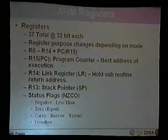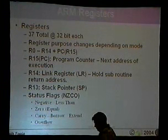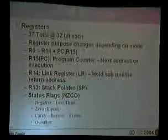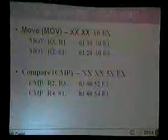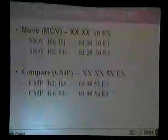Register R15 is the program counter — it holds the address of the next instruction to execute. The link register holds the subroutine return address so the program knows where to return after a subroutine call. The stack pointer points to the current stack location used by the program. The status flags — Negative, Zero, and Carry — are the ones you'll see most often. Here's a debugger screenshot showing registers R0 through R12, the stack pointer, link register, program counter, and the flags.